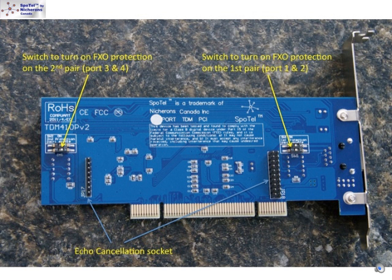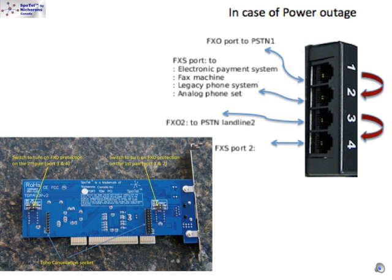Scaling of this solution is accomplished by adding additional ST410P or other Spotel analog interface cards. The main drawback of an IP-based phone system is during a power outage. Our PSTN pass-through technology routes calls from FXS phones automatically and transparently to the PSTN line when the power is down.